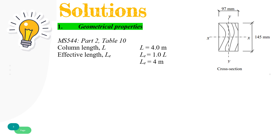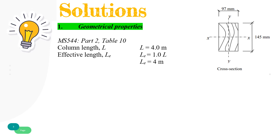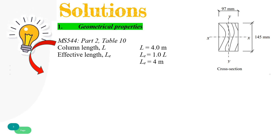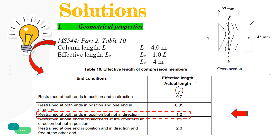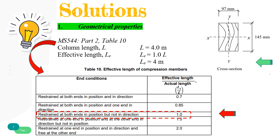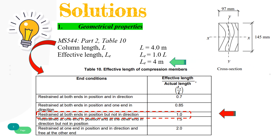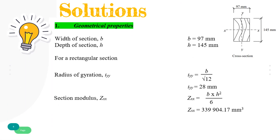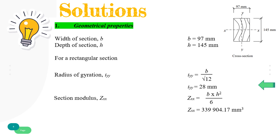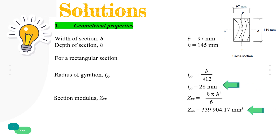The first step is to determine the geometrical properties of the cross section. Refer to Malaysian Standard Part 2, Table 10 for the effective length of compression members. The column is restrained at both ends in positions but not in direction, hence the effective length is length multiplied by 1.0, equal to 4 m. The next geometrical properties to be calculated are radius of gyration and section modulus using the respective formulas shown on the slide. These values will be used in the next steps.